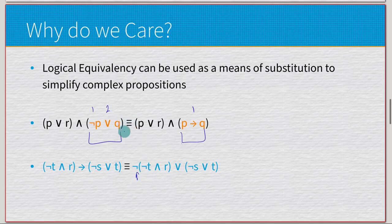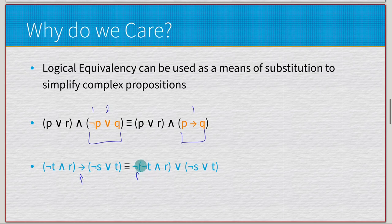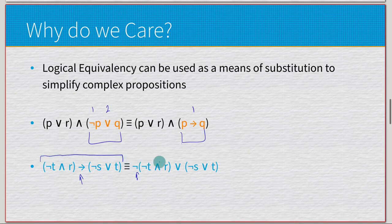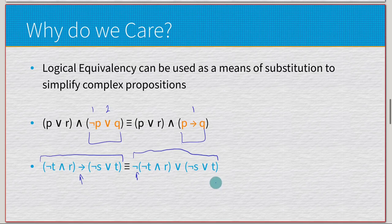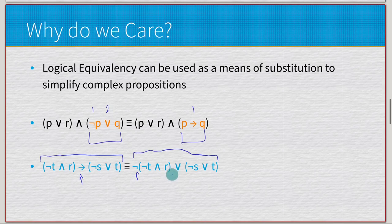On the other side, we have negated T conjoined with R implies negated S disjoined with T, which transforms to the negation of negated T conjoined with R, disjoined with negated S disjoined with T. This removes the conditional statement. If we have a Boolean system — maybe in hardware — that only handles negation, disjunction, and conjunction (ANDs, ORs, NOTs), we can transform this propositional logic expression into a Boolean algebra form, which that system can then process.